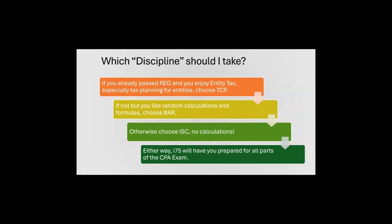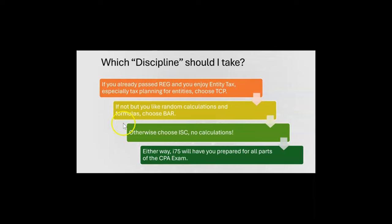especially tax planning for entities, choose TCP. If not, but you already passed FAR and you like random calculations and formulas, then choose BAR — Business Analysis and Reporting. Otherwise, choose ISC — Information Systems and Controls — no calculations at all.